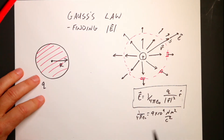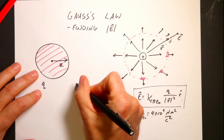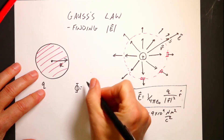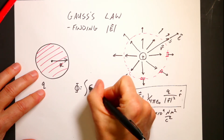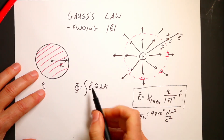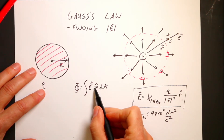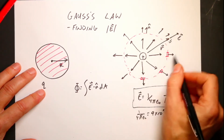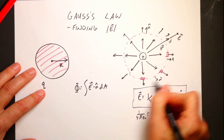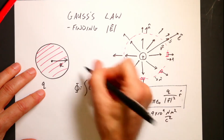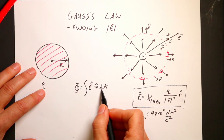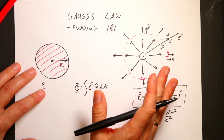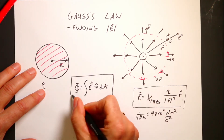We define flux using the symbol phi. The real definition is a surface integral of the electric field dot n-hat, where n-hat is a unit vector pointing perpendicular to the surface. This dot product is integrated over the whole surface using a small surface element dA. This is the real form of the flux — it takes into account that the electric field is a vector and gives you a single value.